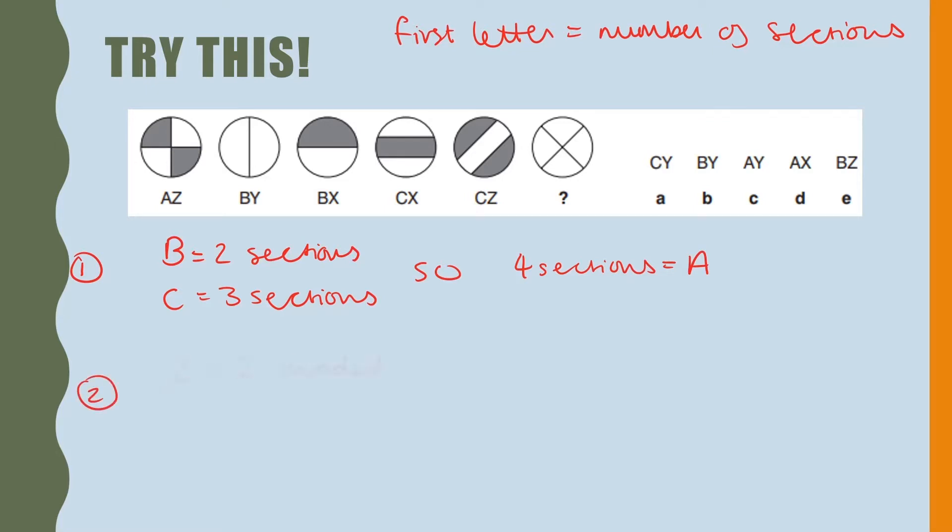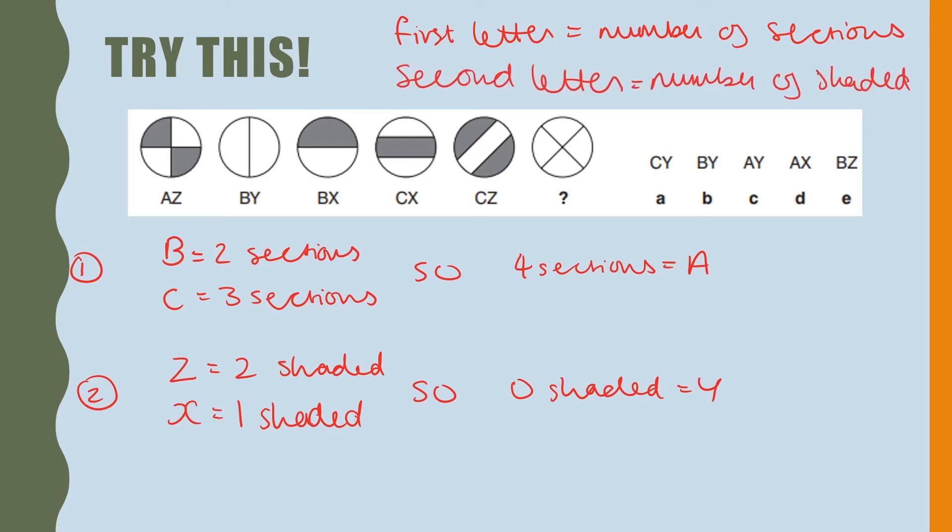Step two. Letter Z has two shaded sections and X has one shaded section. The shape we're looking for has zero shaded sections. And that is the letter Y. So we know the second letter is equal to the number of shaded quadrants. So we know our answer should be A, Y.